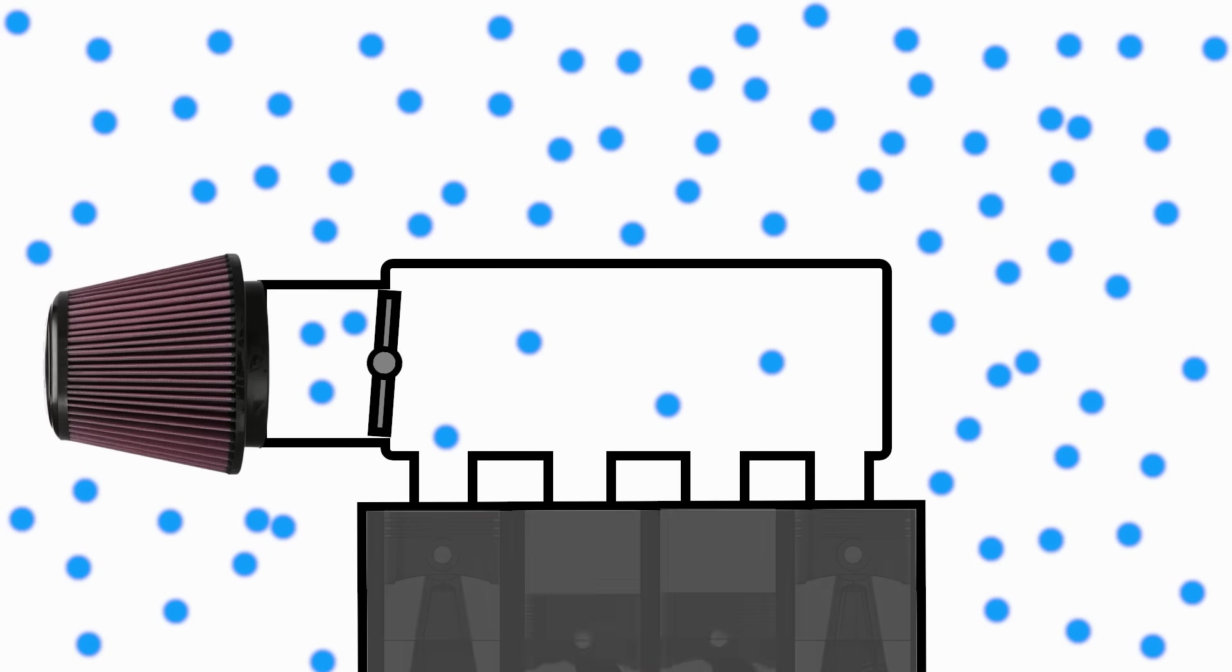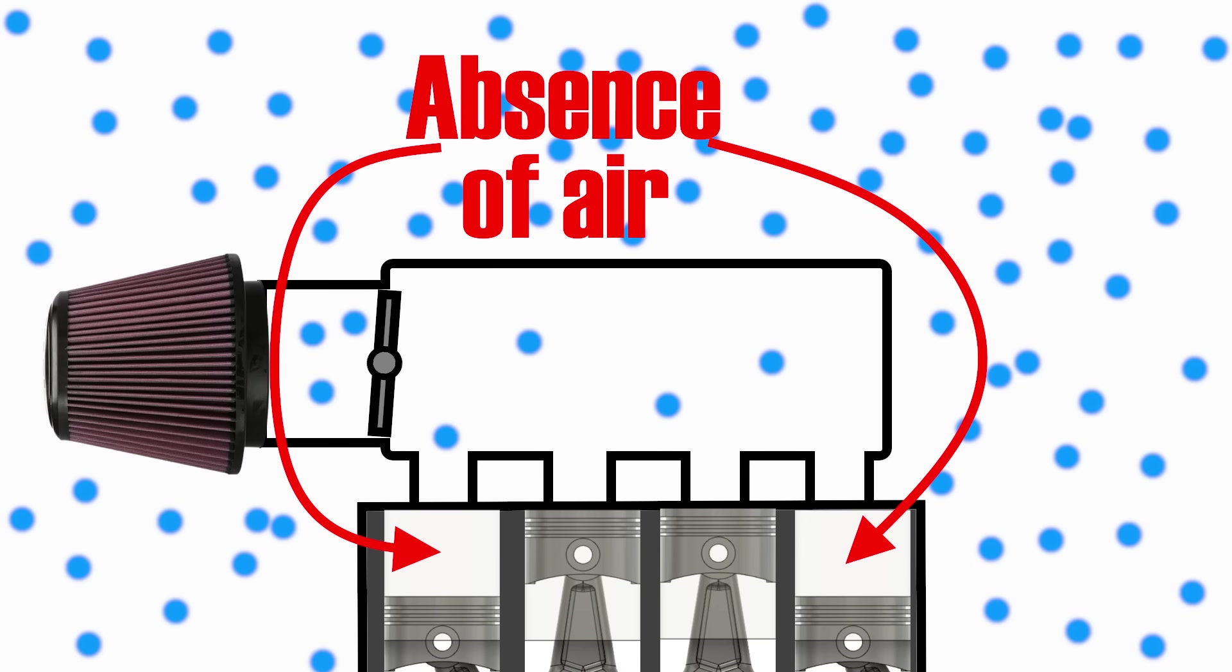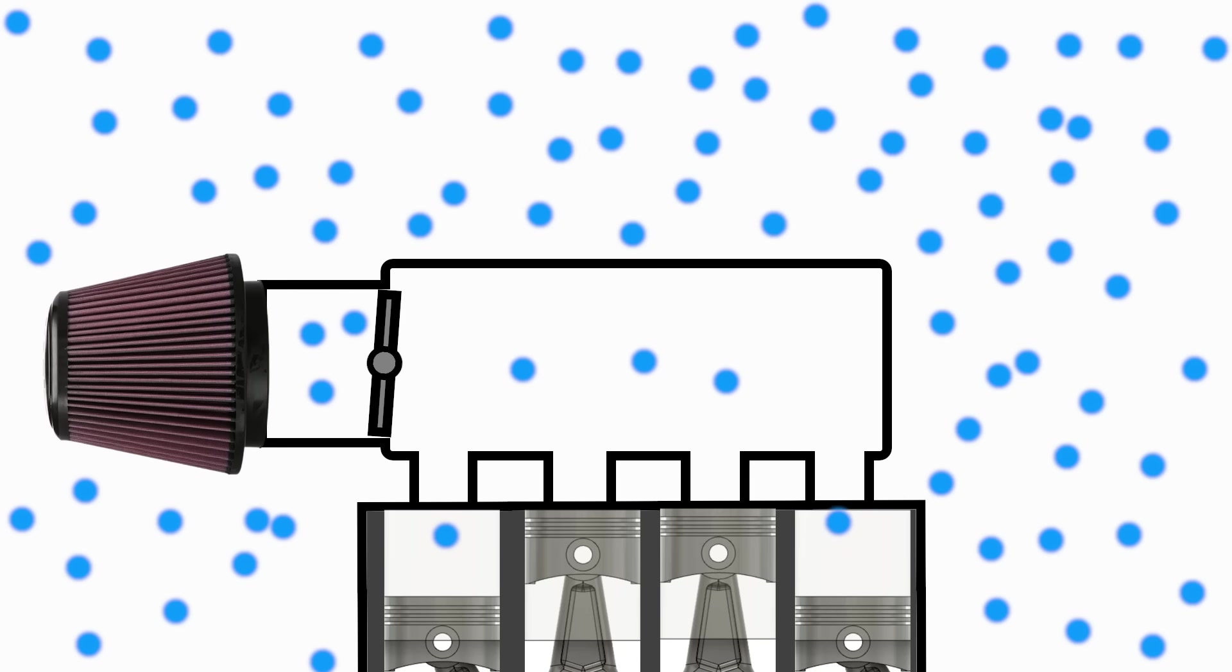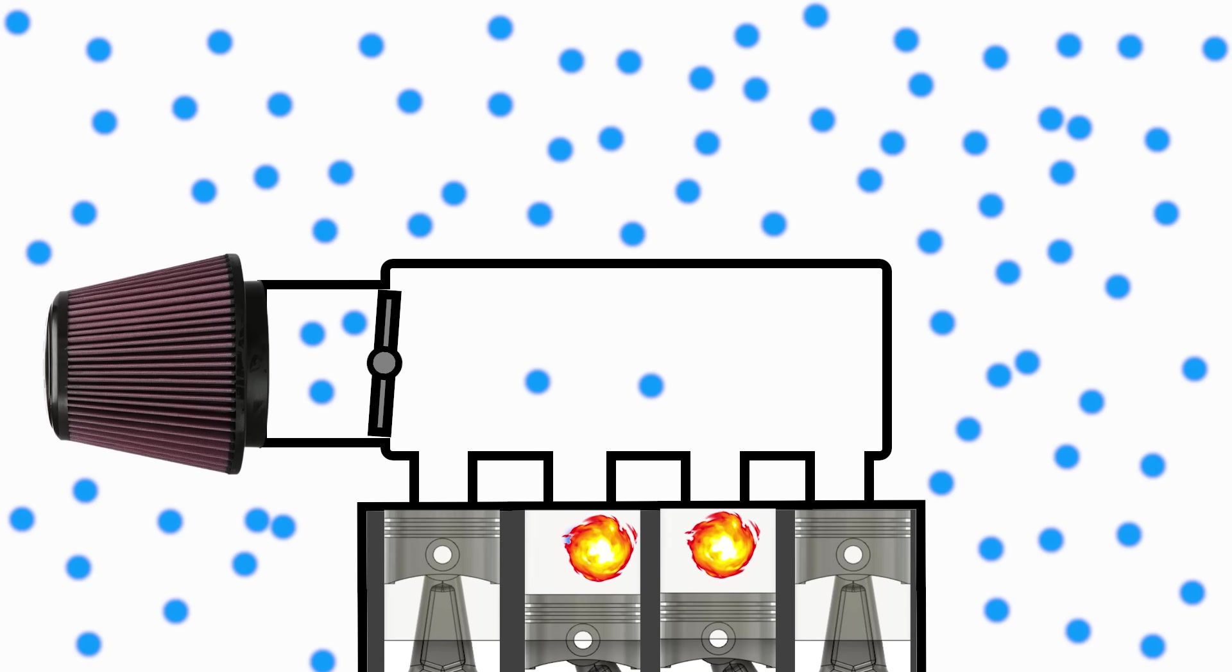But at the same time, the engine is running, and the downward motion of the pistons is creating a void, or absence of air above the piston. Air from the intake manifold quickly rushes into the engine to fill that void, and then that same air is mixed with fuel, compressed, burned, and expelled out the engine as exhaust gas. In other words, we are consuming the air.